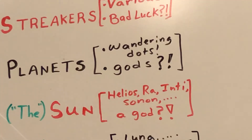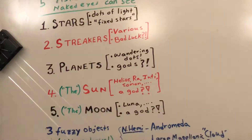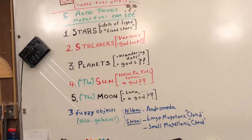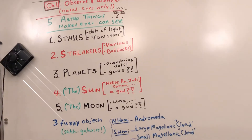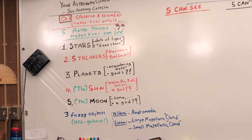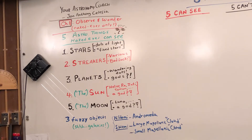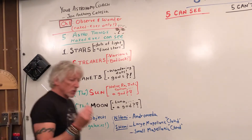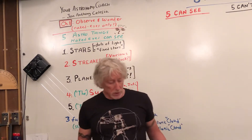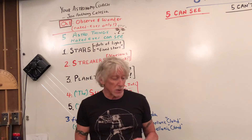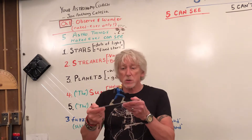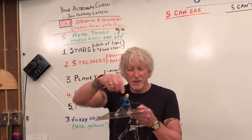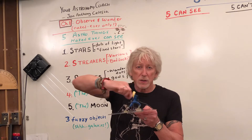Let's make a list. Pause and think — what can you see with your naked eye? What astronomical things, what categories? That's what chapter one is about: we're going to summarize what our ancestors saw with their naked eye.